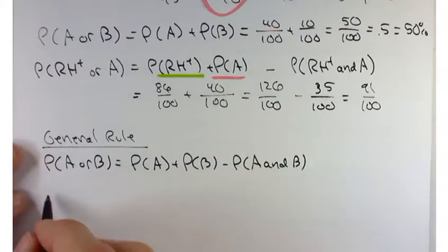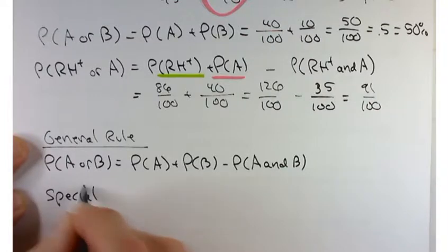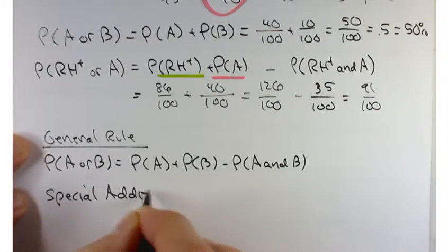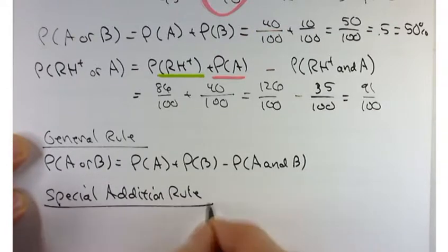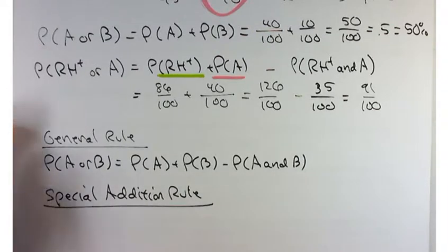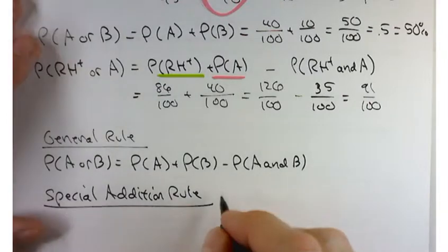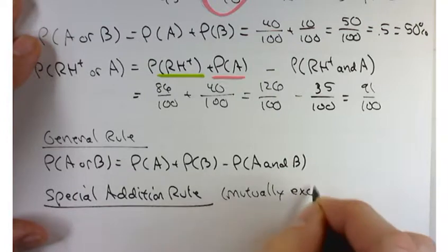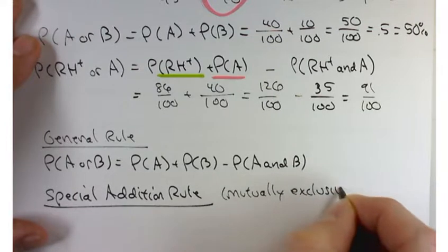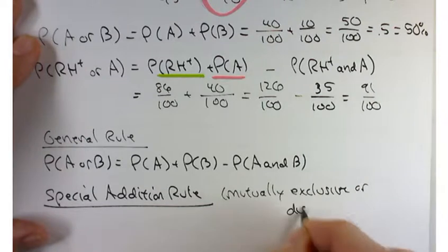So the special rule, special edition rule, applies to what are called disjoint or mutually exclusive events. Mutually exclusive or disjoint events.